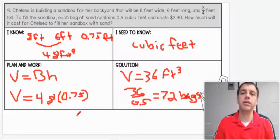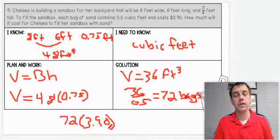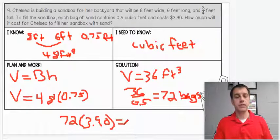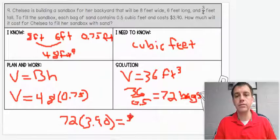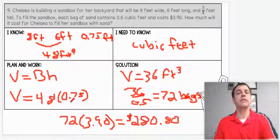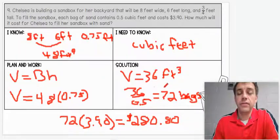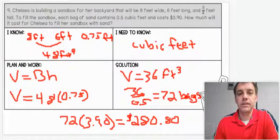Now, if every bag costs $3.90, we're going to take 72 and multiply it. Because every bag costs $3.90. Let's go ahead and multiply those together. The total cost is going to be, this is quite expensive, $280.80. That's a lot of work for that problem. I hope that made sense. If you guys have questions, feel free to reach out and ask. That does it for this video. See you next time.